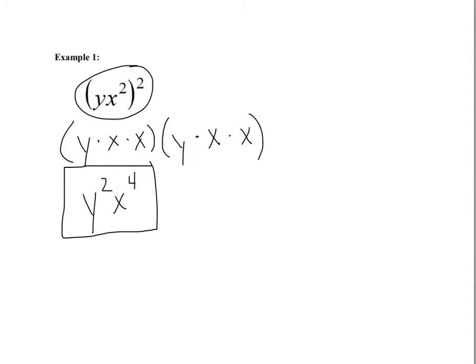When you're looking at this, you can look for patterns. What we're doing is taking this outer exponent of 2 and distributing it to the y — giving us y to the second — and distributing it to the x, so 2 times 2 gives us our 4. Hopefully that makes a little more sense as we look at this second example.